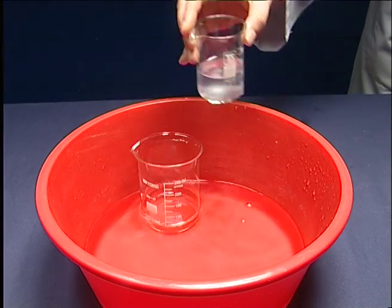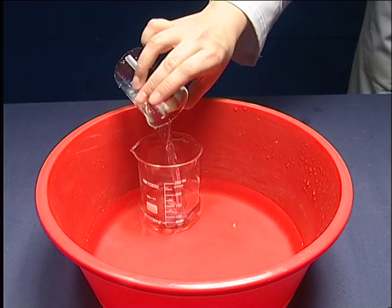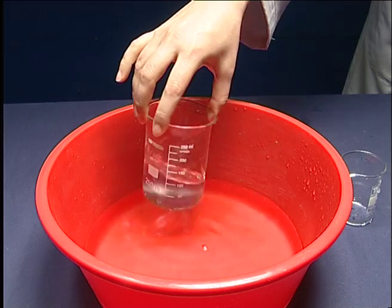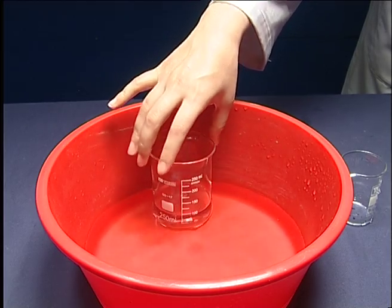Pour the solution in the 100 milliliters beaker into another beaker and shake rapidly. Then keep it in the water bath again and start the chronometer.